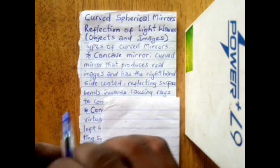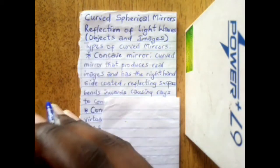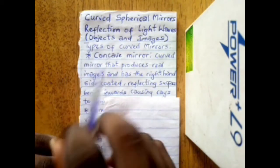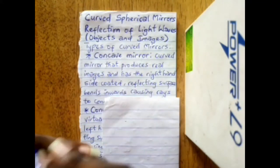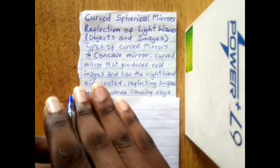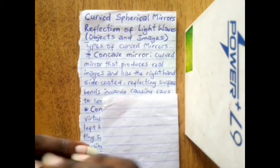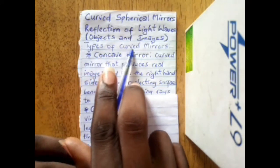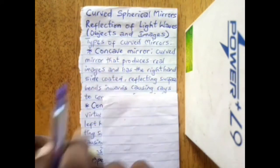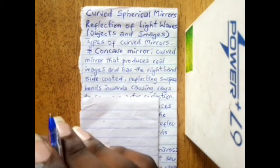Due to reflection in mirrors, we'll be discussing objects placed in front of mirrors and the images formed by spherical mirrors. This is all based on the principle of reflection. We have basically two types of curved mirrors: the concave mirror and the convex mirror.